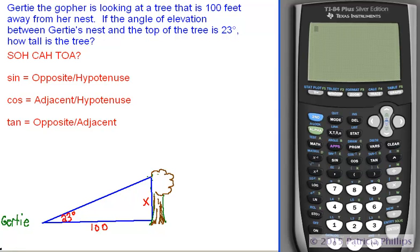And Gertie is, it says the angle of elevation so that means that she's looking up at the tree. And we want to figure out how tall that tree is based upon the fact that we know that the angle she's looking at is 23 degrees and she's 100 feet away.